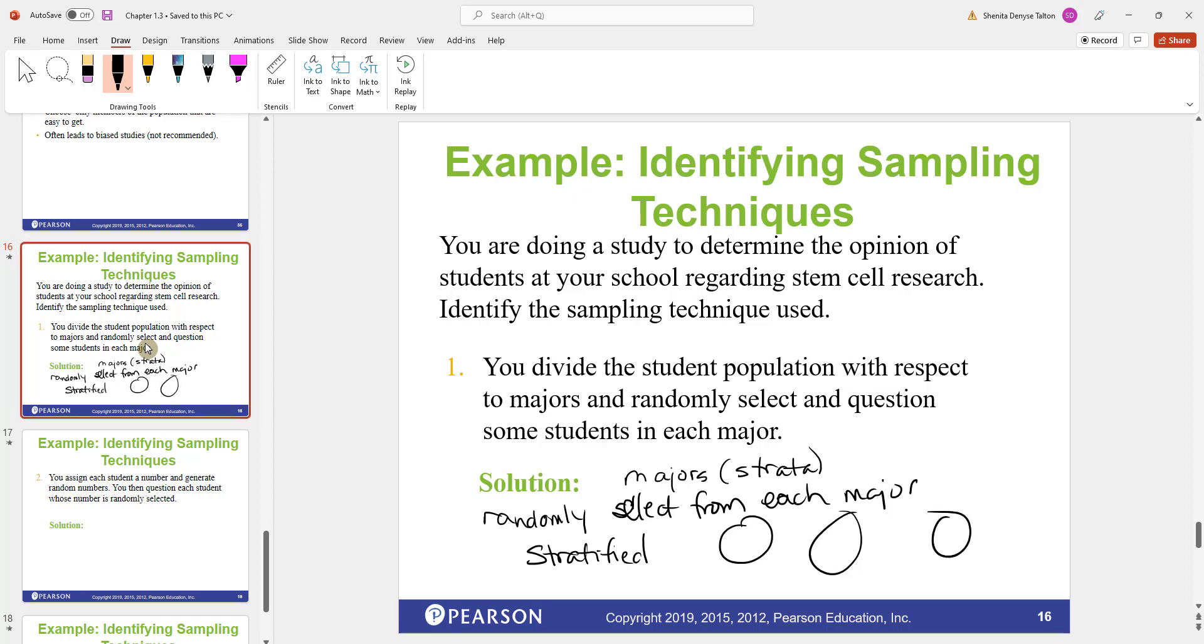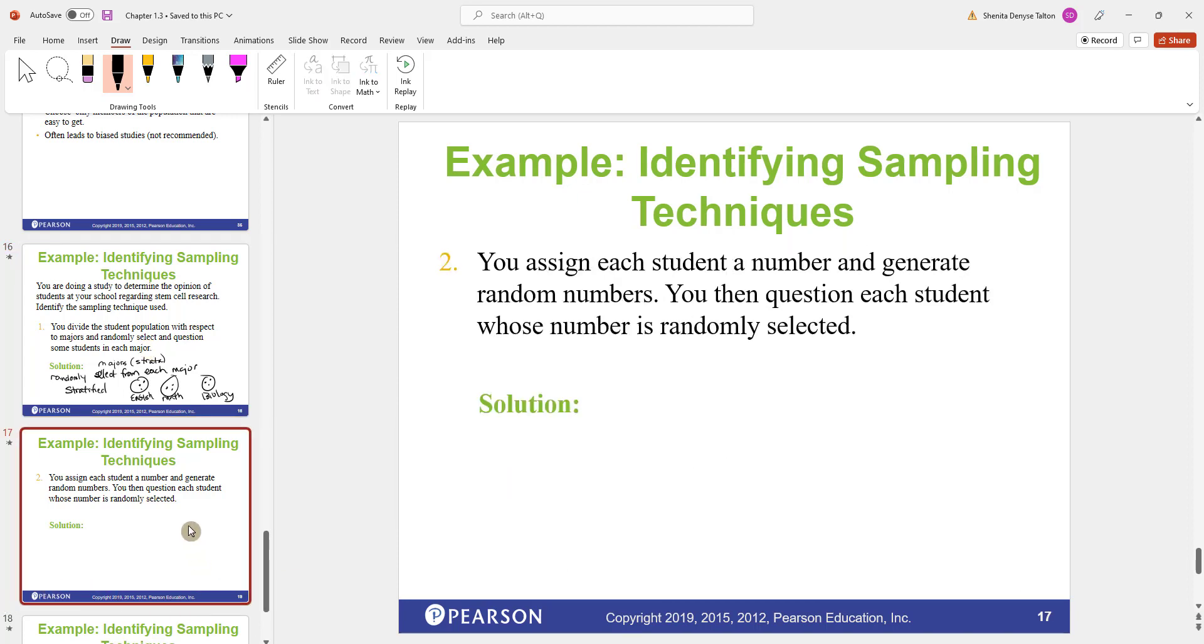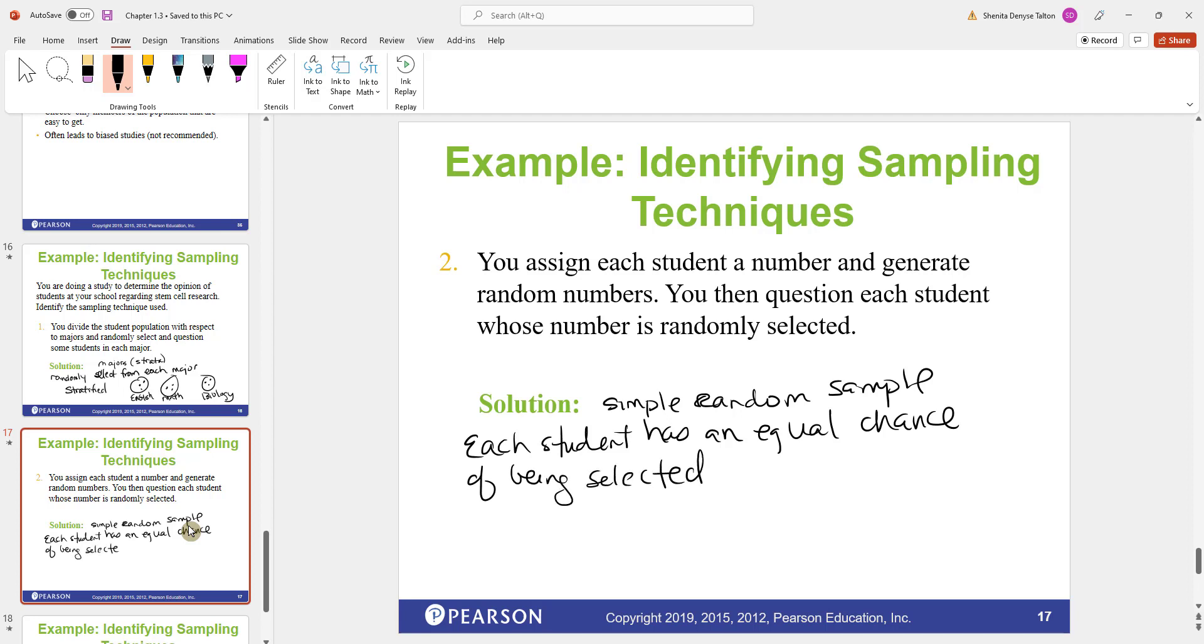If you got a major here, let's say people here are majoring in English, this is math, and this is biology, and then you randomly select from each major. Those are your stratum. Let's say you assign each student a number and generate random numbers. You then question each student whose number is randomly selected. So this is pretty much a simple random sample. Each student has an equal chance of being selected.